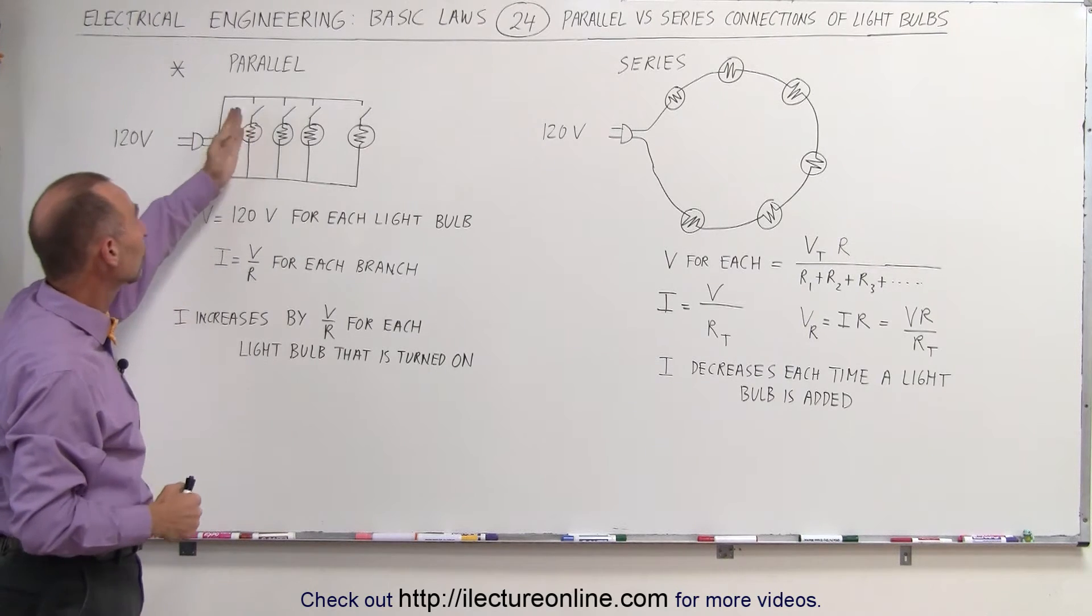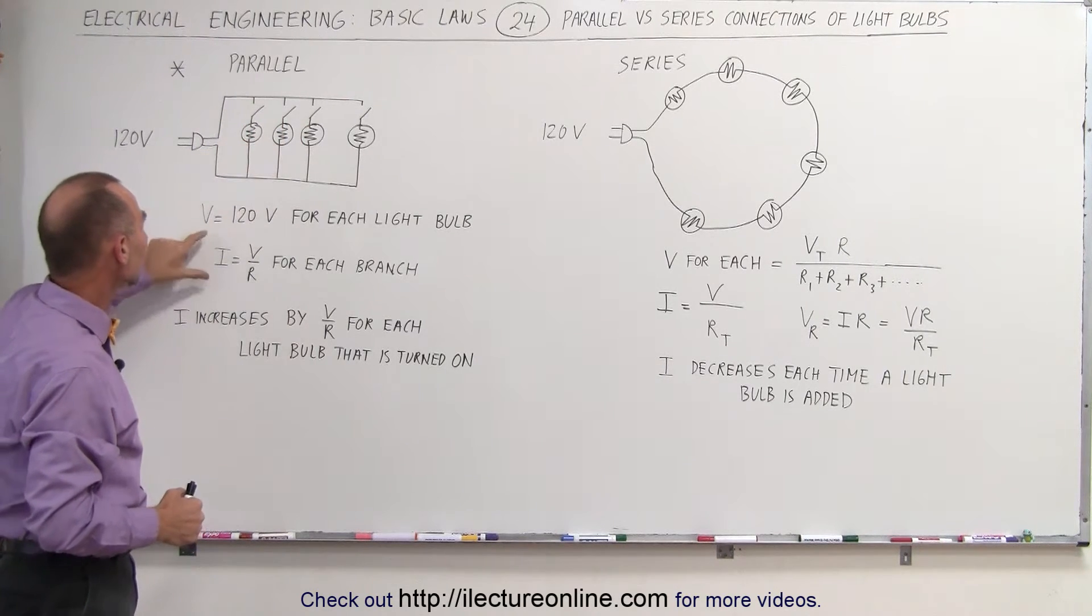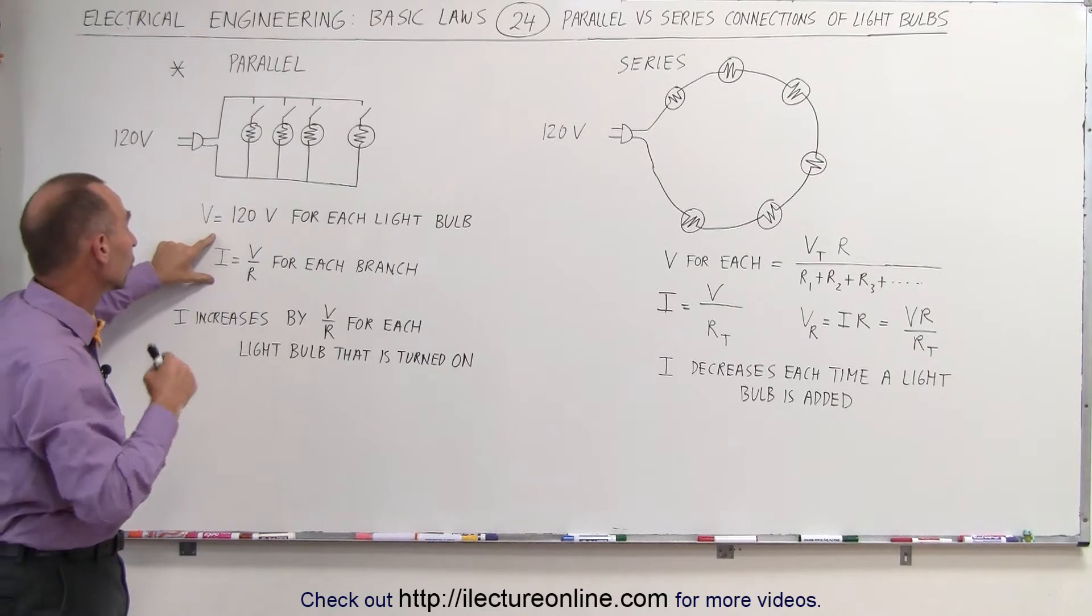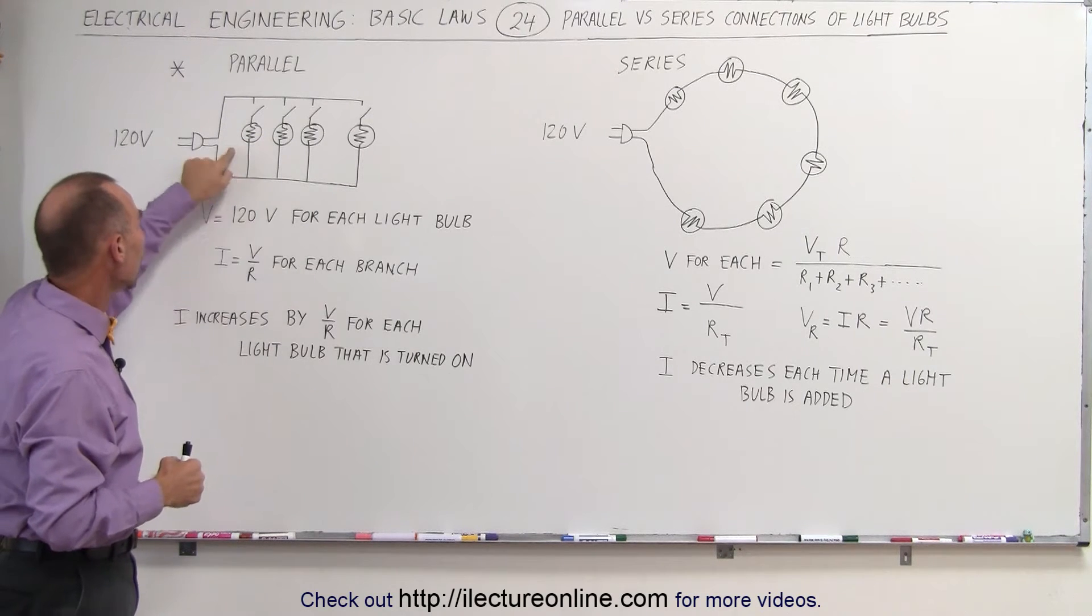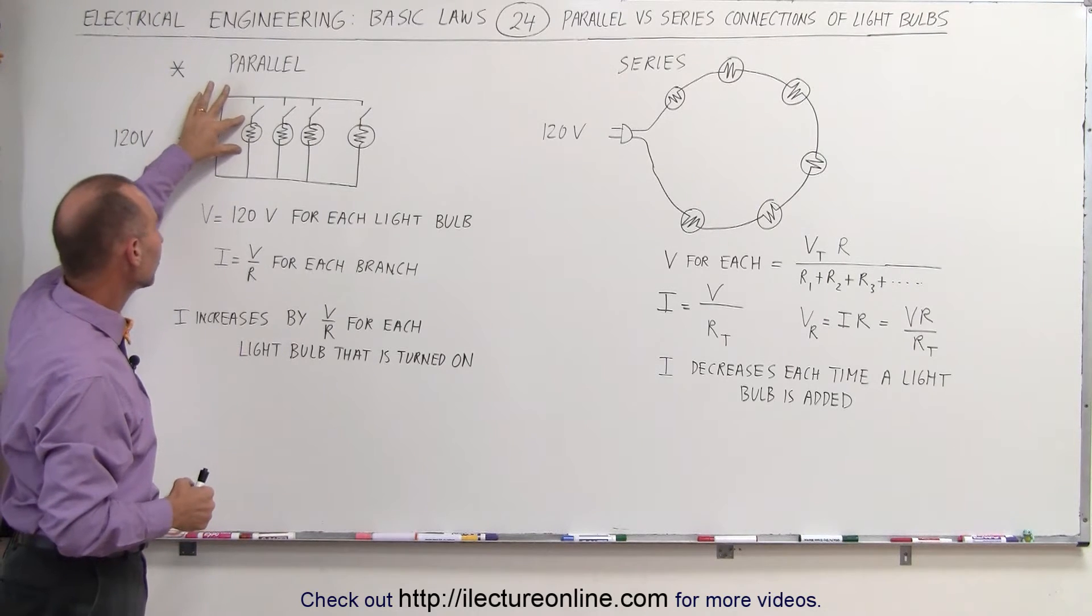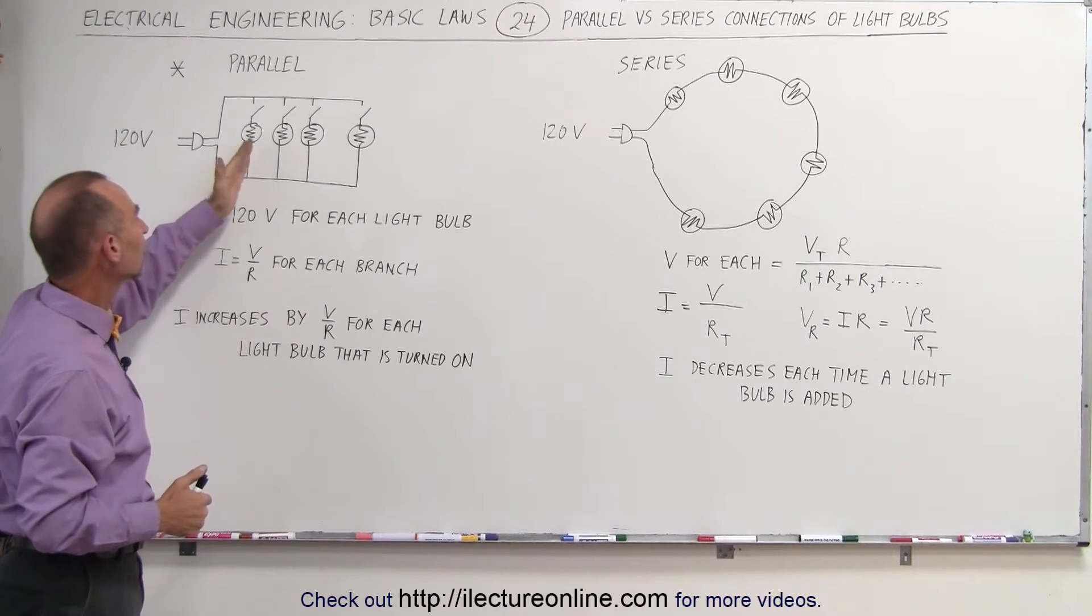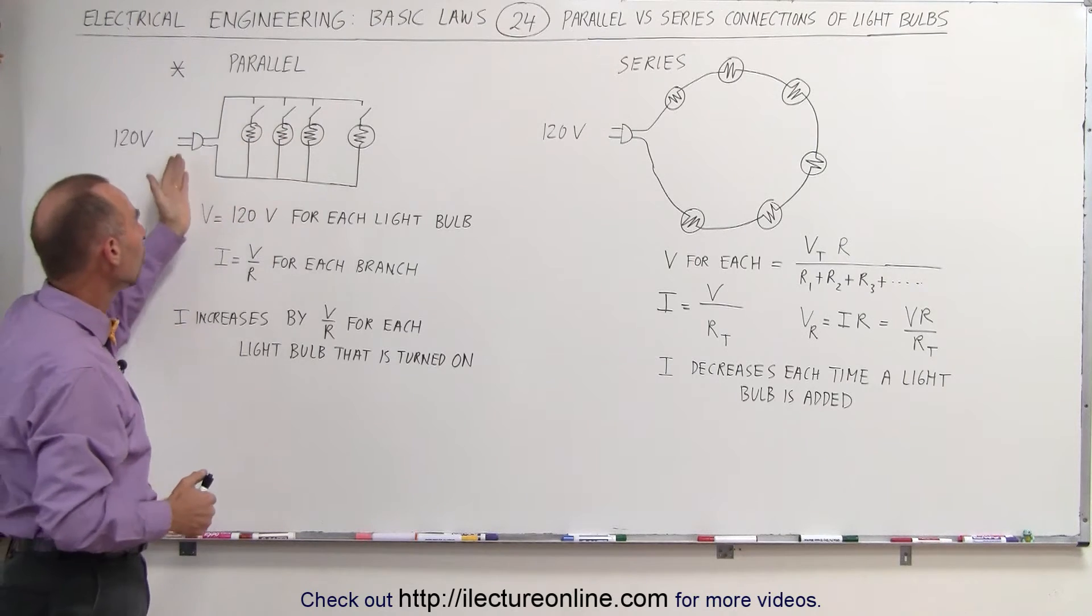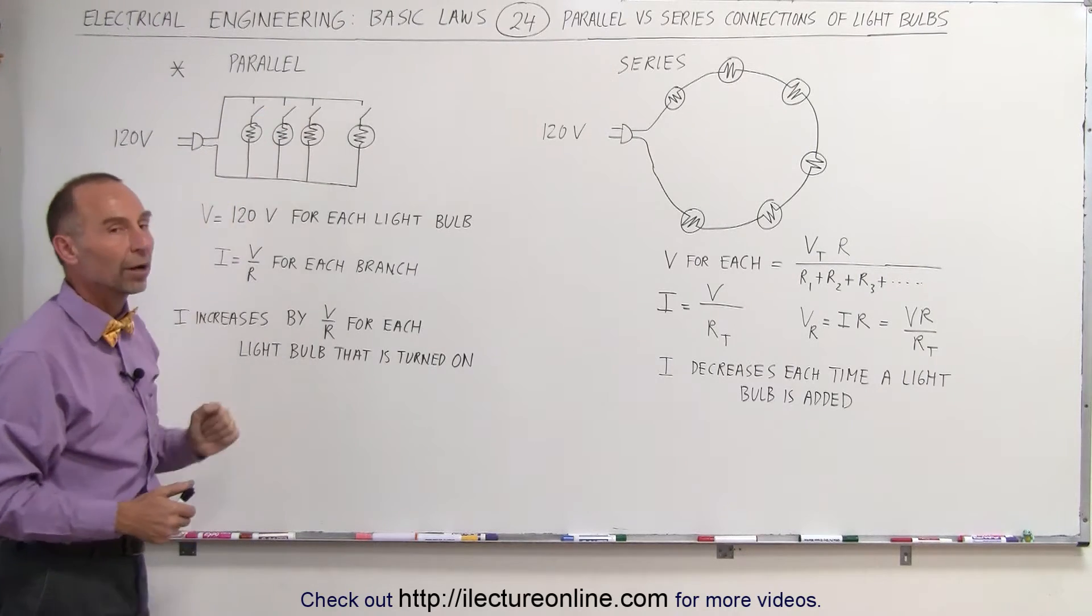What happens though is as you turn more and more light bulbs on each light bulb will require a certain amount of current. Each branch will draw V over R, the applied voltage divided by the resistance of each light bulb. And so you can see that as you turn more and more light bulbs on, more and more current will be required.